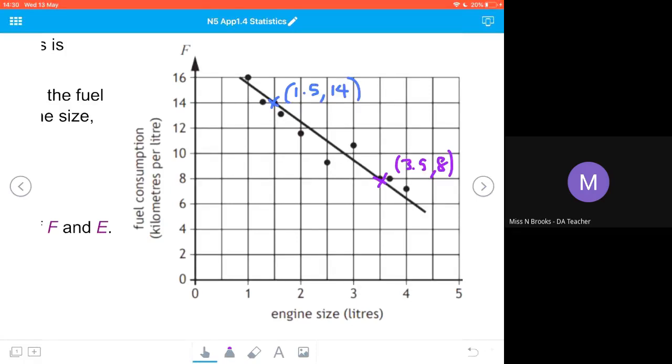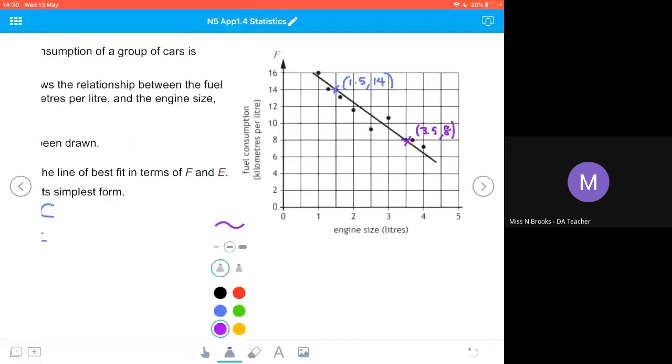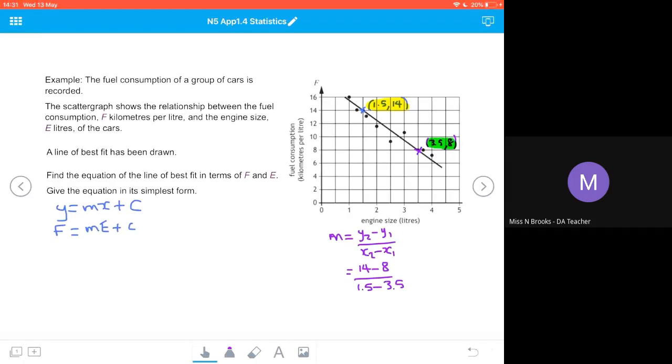Now we use our gradient formula. The gradient formula says m equals y2 minus y1 over x2 minus x1. We let 1.5, 14 be our x2 and y2, and 3.5, 8 be our x1 and y1. Substituting our values: y2 was 14, take away 8, over x2 was 1.5, take away 3.5. That gives us a gradient of negative 3.